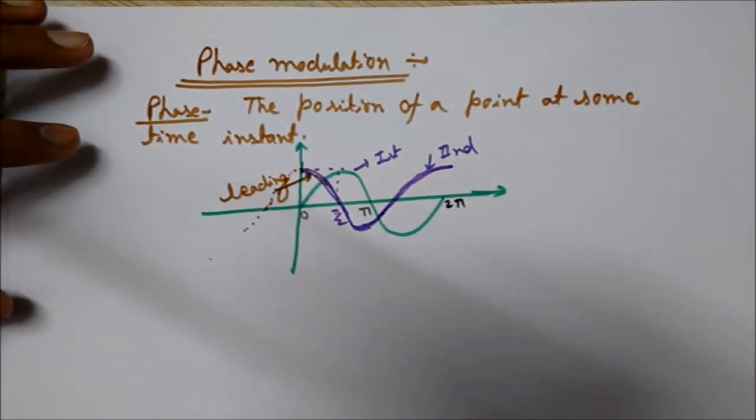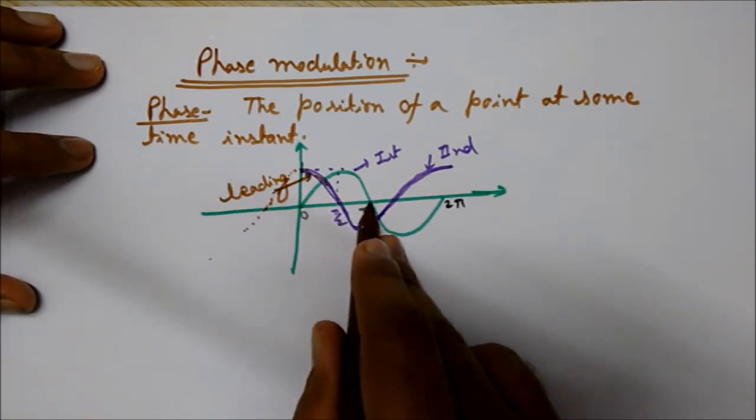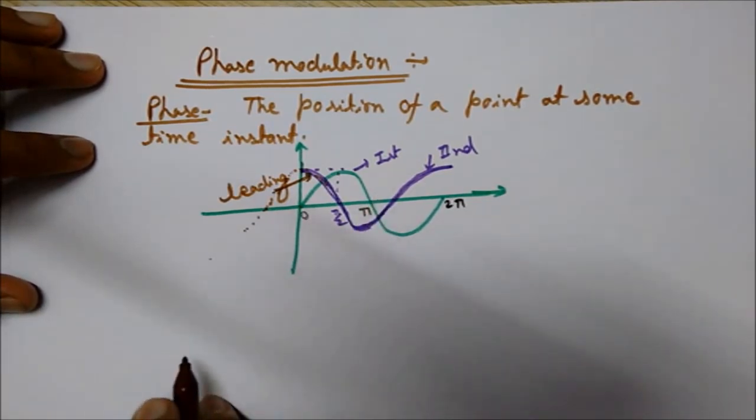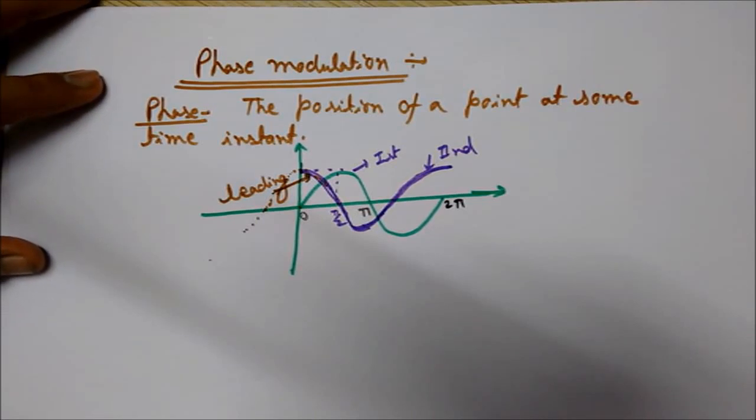But if they differ by a phase difference of 180 degrees, like pi, then these are called in phase opposition. So now let's define the phase modulation. Let's come to our topic, phase modulation.